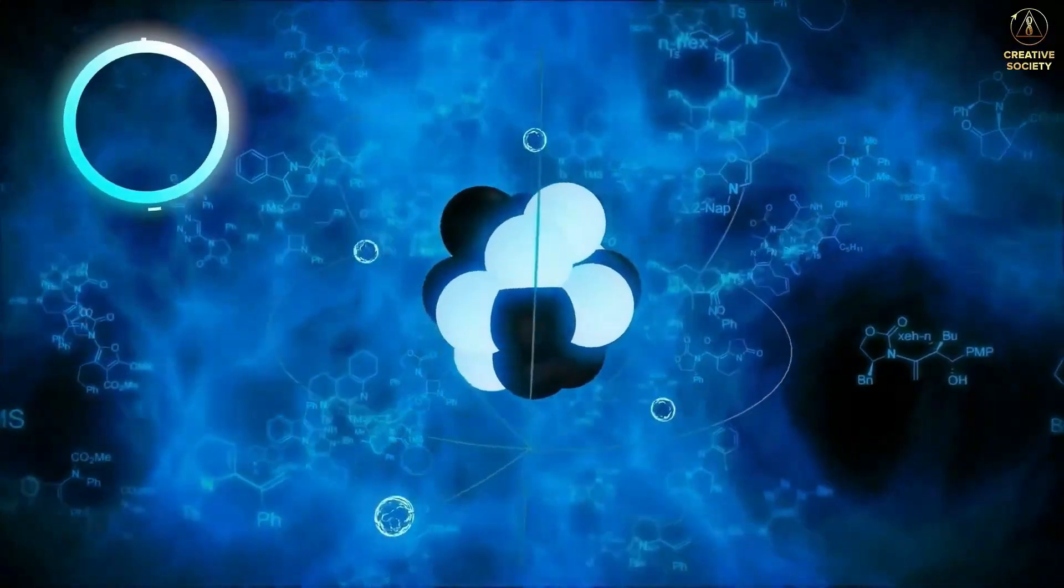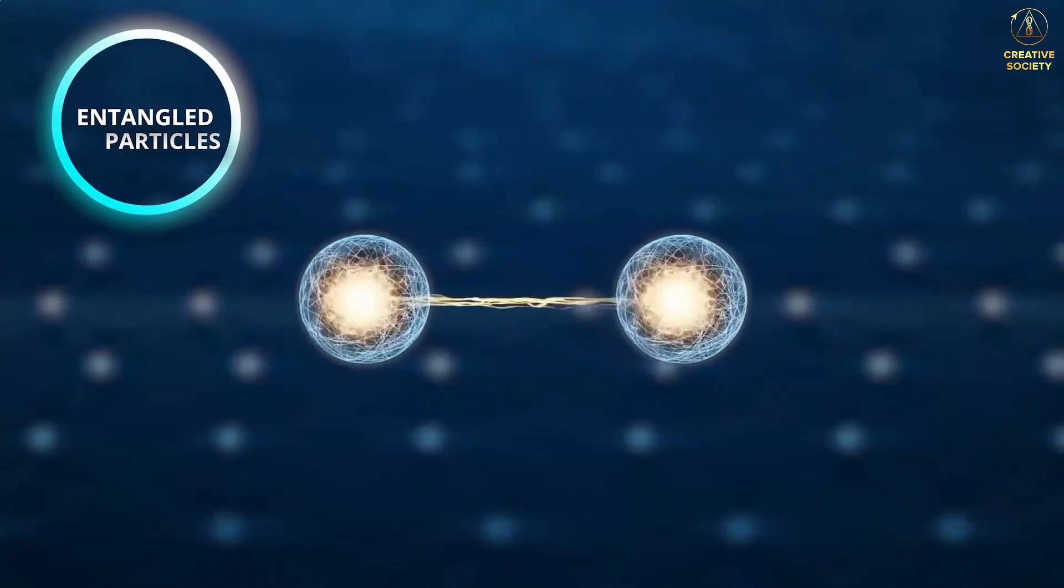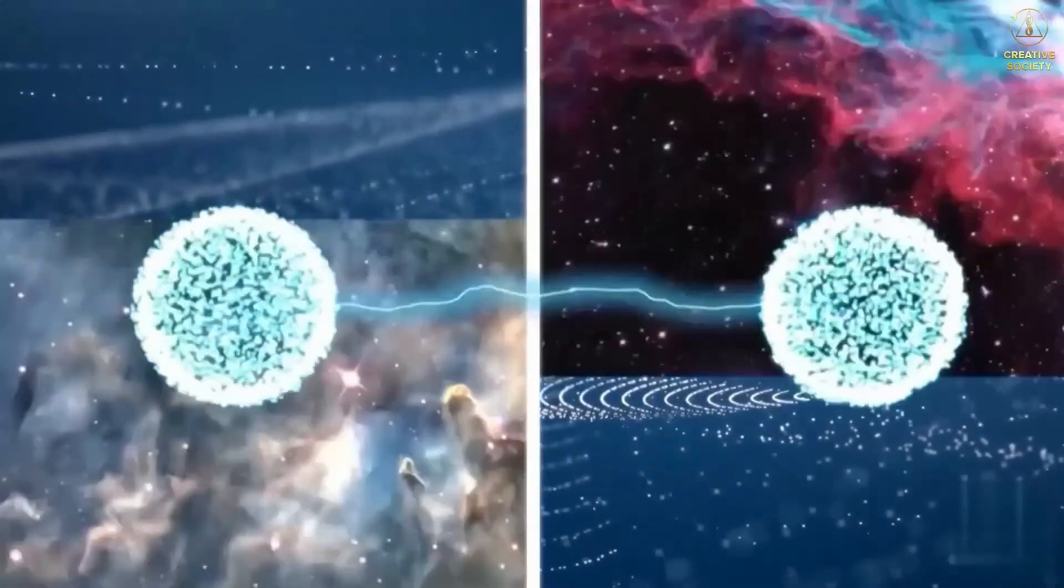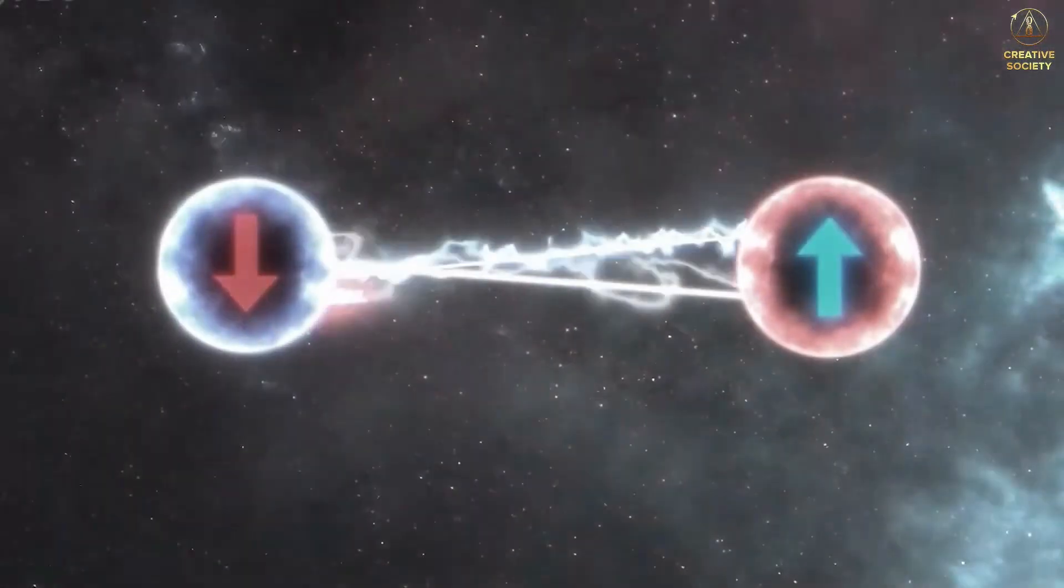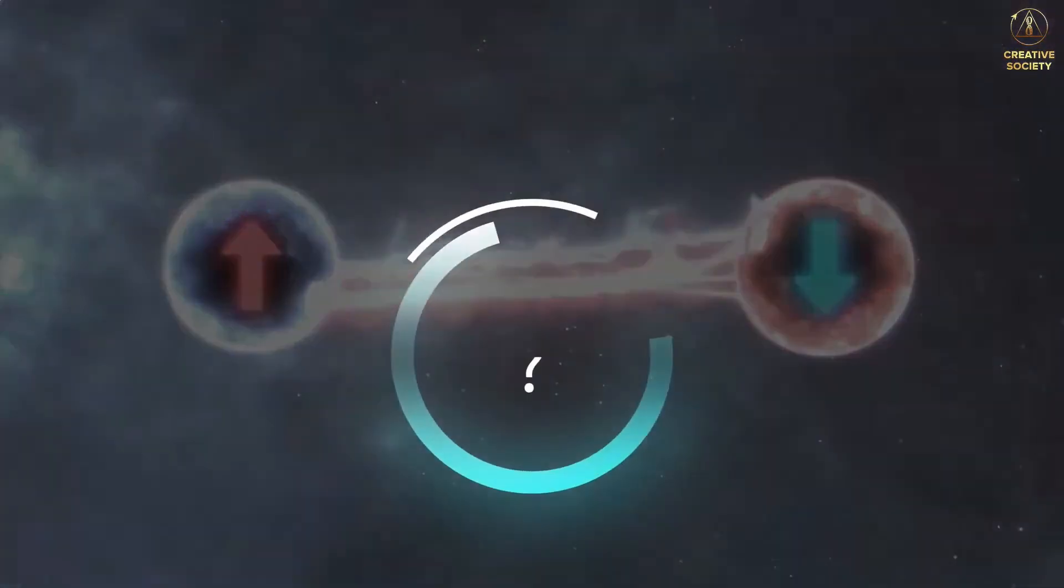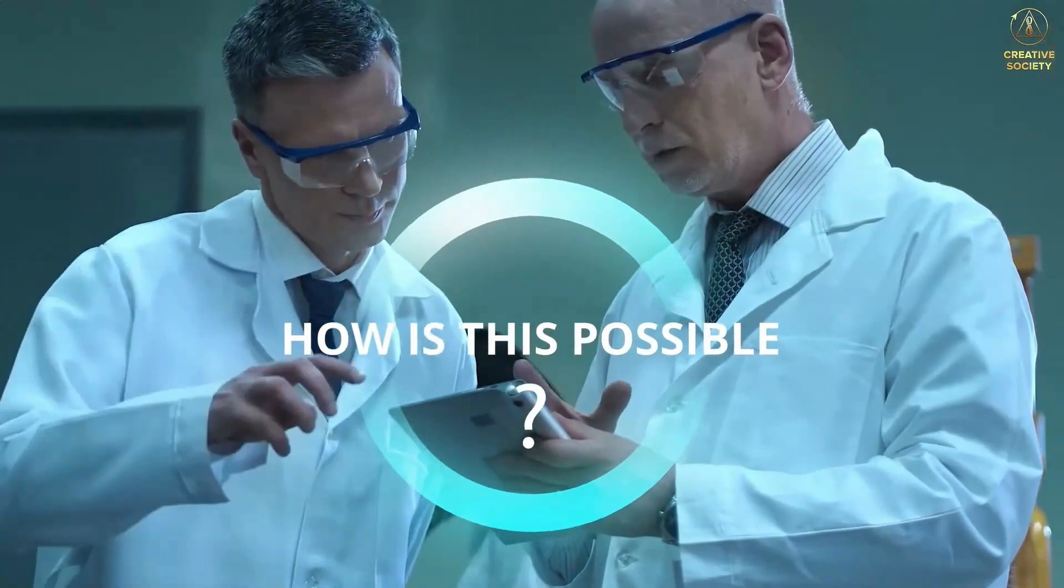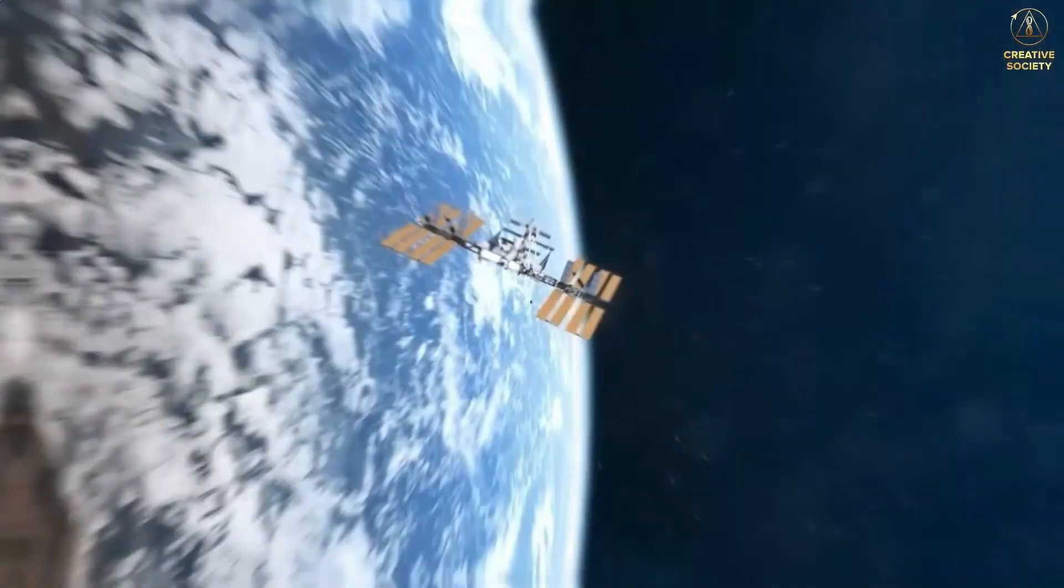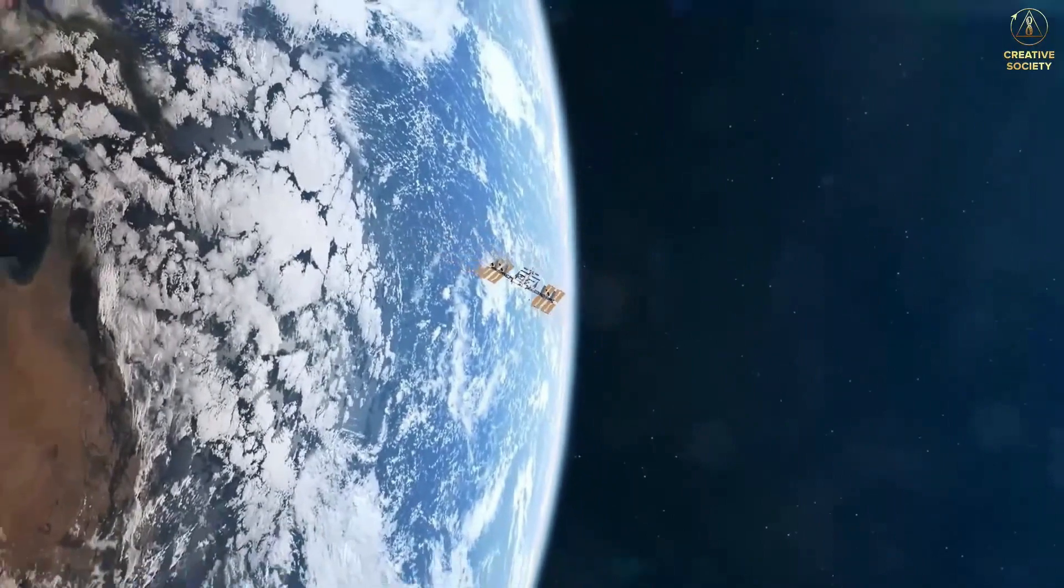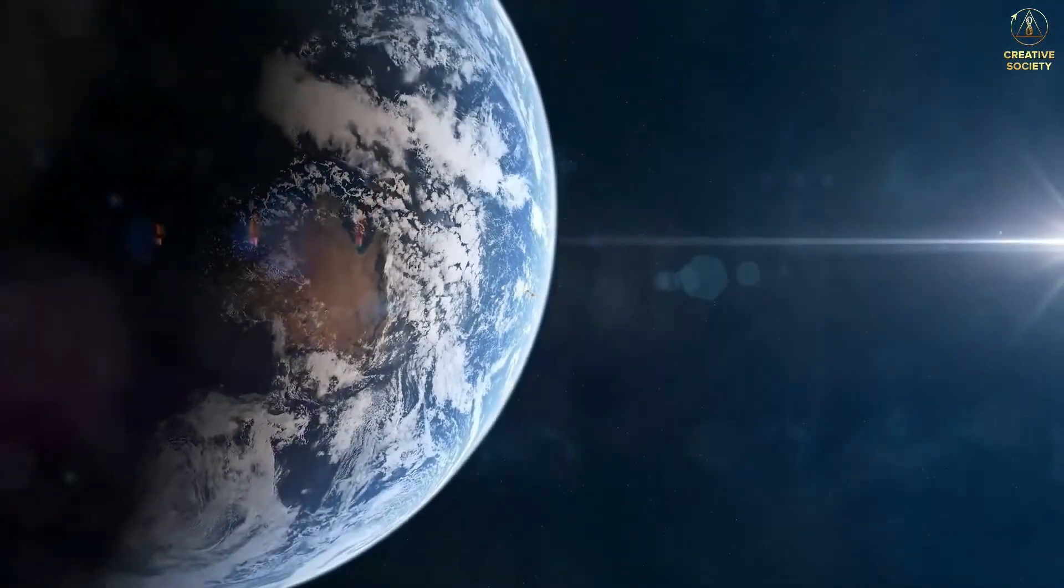Let's take another example. In quantum physics, there is a phenomenon known as entangled particles. Two particles can be at different edges of the universe and interact with each other without loss of time. A change in the state of one particle instantly causes a change in the state of the other. How is this possible when modern physics says there is nothing faster than the speed of light? It's a question that has led modern science into a dead end. Scientists have no answer.